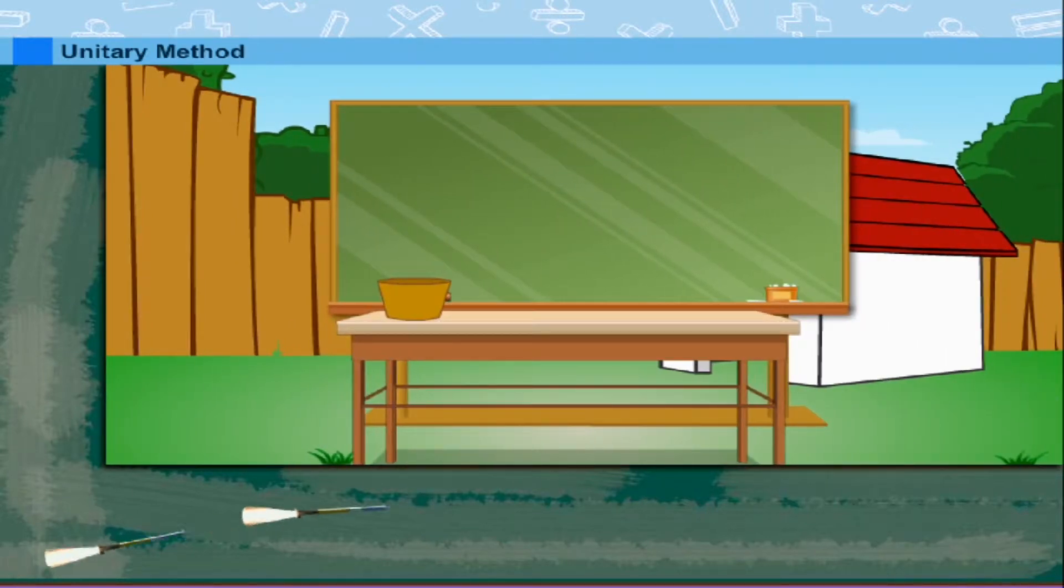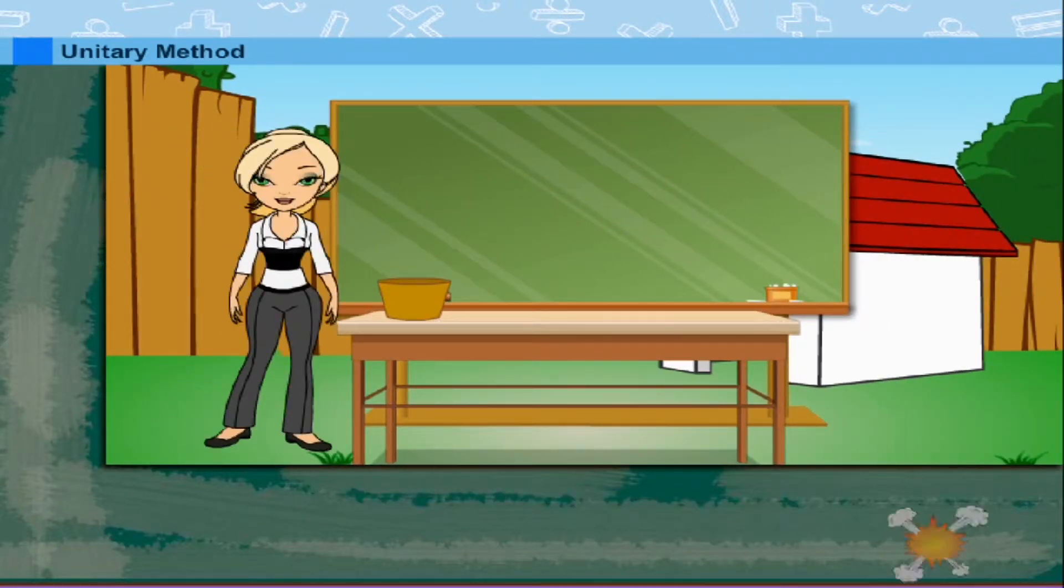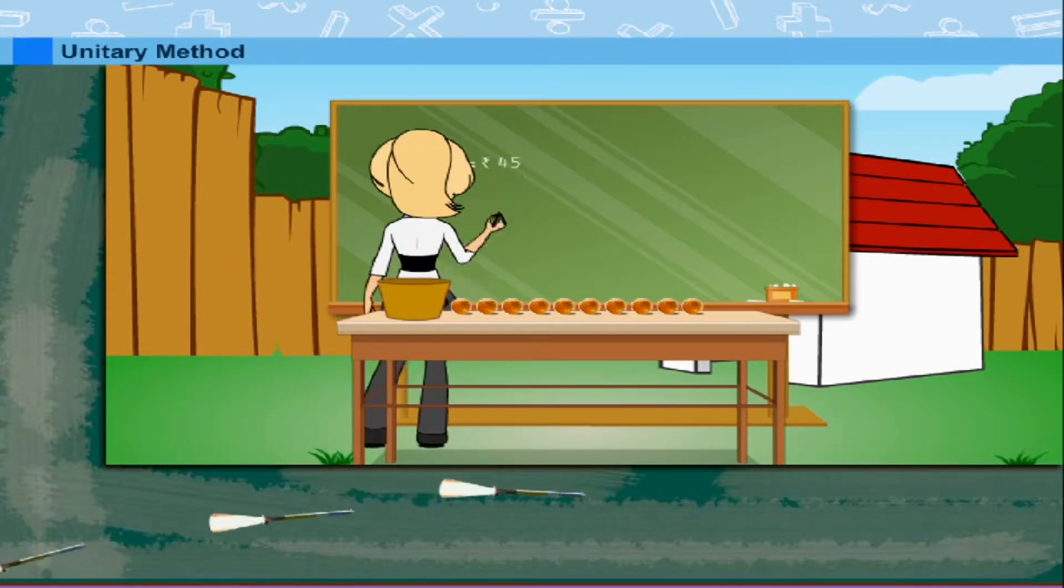Unitary Method. Teacher Rosie is in her backyard with oranges on her table. 10 oranges cost Rs.45.